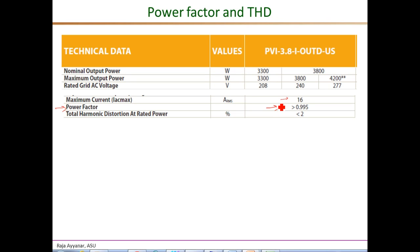Even though inverters are four-quadrant devices capable of operating at any arbitrary power factor, and this capability can be used to provide reactive power support or voltage support to the grid, at present standards like IEEE 1547 do not allow string inverters to actively take part in voltage regulation. But in the near future it may become a standard feature for inverters to provide reactive power and voltage support to the grid, especially when they are not operating at full rated power under lower solar irradiance conditions.